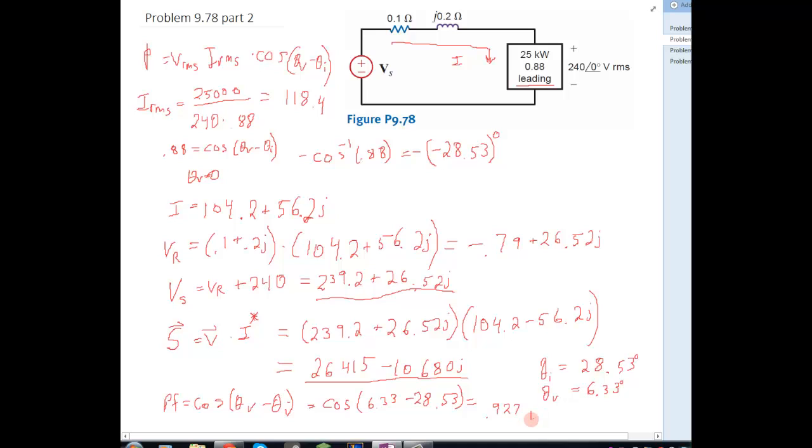And this is leading. Now remember, we call it leading because this subtraction in here is a negative number. But again, since cosine of a negative number will give you the same result as cosine of a positive number of the same magnitude, we have to say whether it's leading or lagging. So if it's a negative angle, we call it leading. If it's positive, we call it lagging.